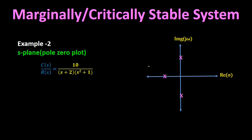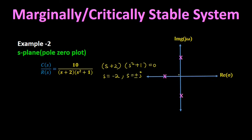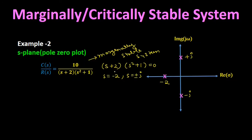Next example: C(s)/R(s) = 10/((s + 2)(s² + 1)). Equating the denominator to zero: (s + 2)(s² + 1) = 0. The poles are s = −2, and s = ±j (complex conjugate poles). On the s-plane, s = −2 lies in the left half, while +j and −j lie on the imaginary axis. Two poles are on the imaginary axis and one pole is in the left half of the s-plane, so this system is marginally stable.